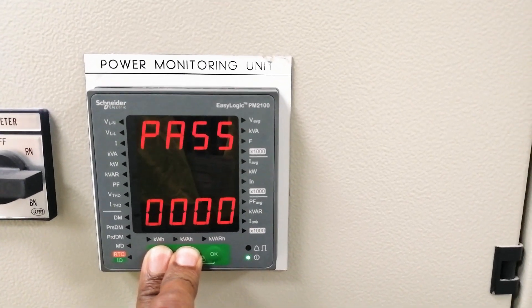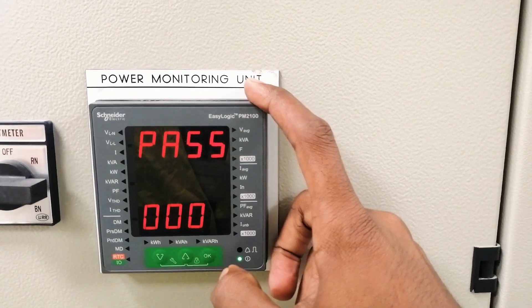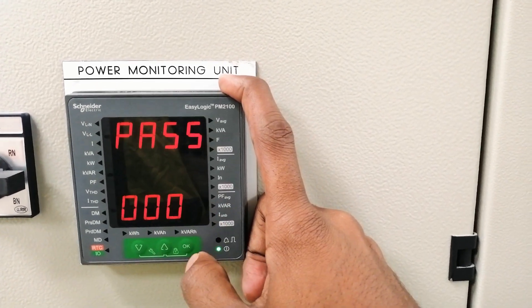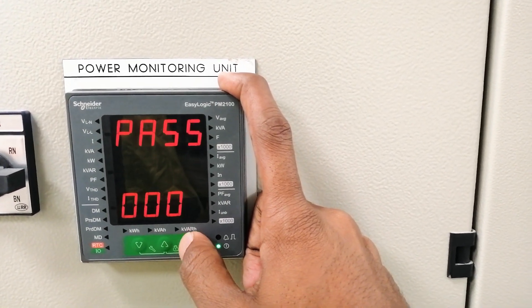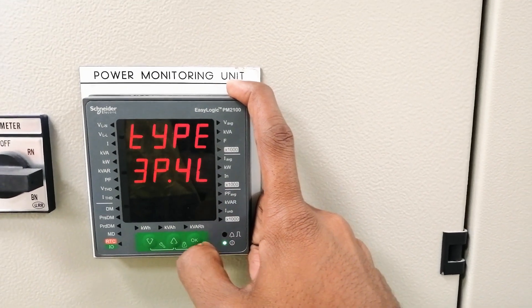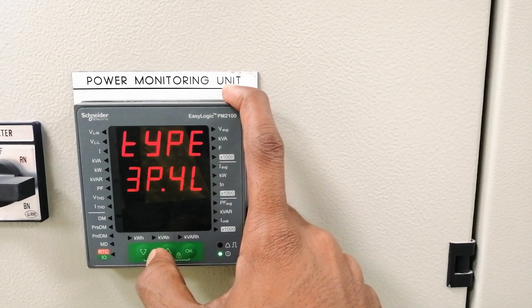First, press up-down correctly. By default password is 0 0 0 and press OK. Type 3 phase, 4 wire.